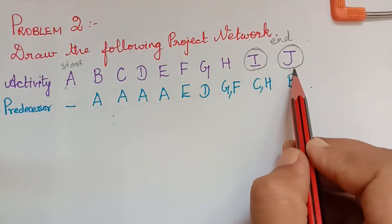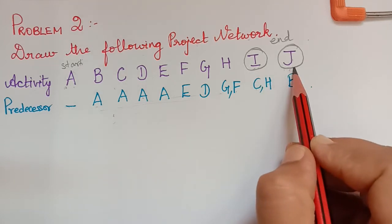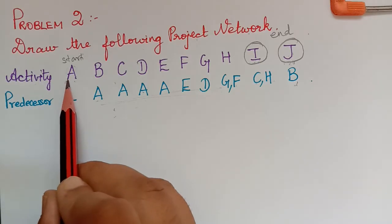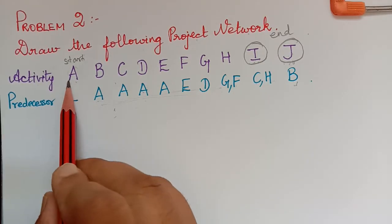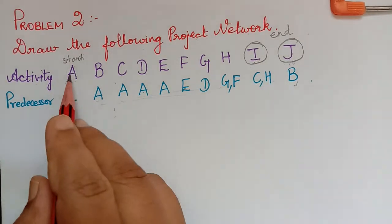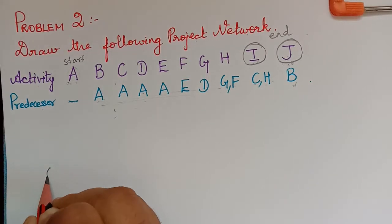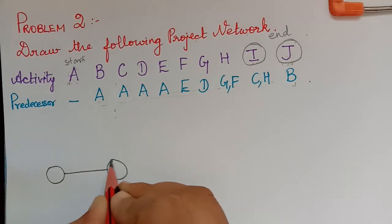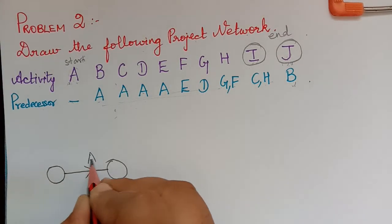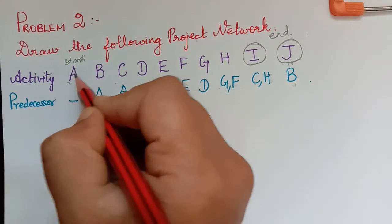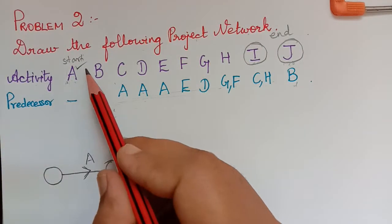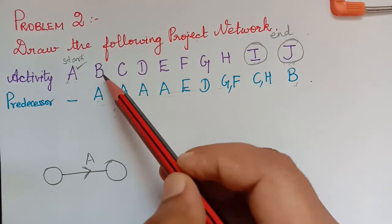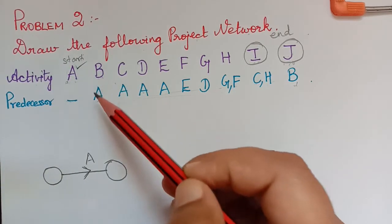Now, after making this decision, let us start drawing the network diagram. First, we draw the starting activity A. Since it is the only starting activity, we draw a single line for activity A. After completing an activity in the diagram, we make a tick mark so we know it is done.